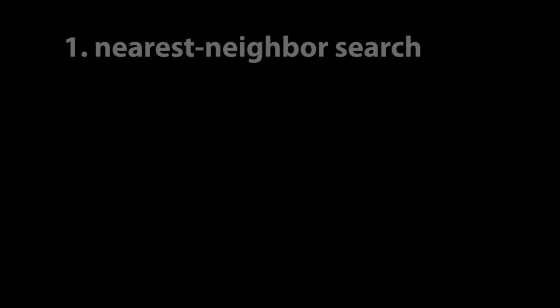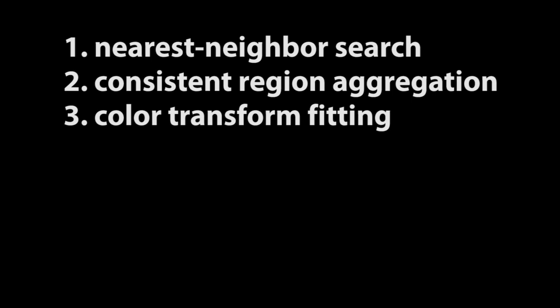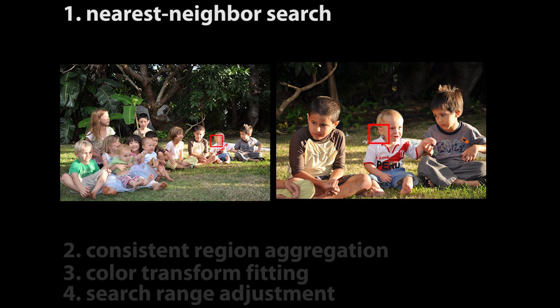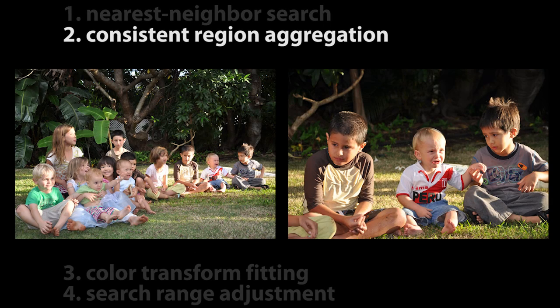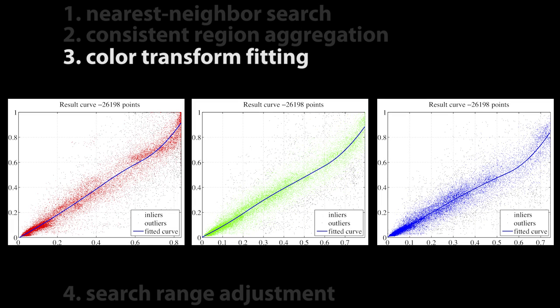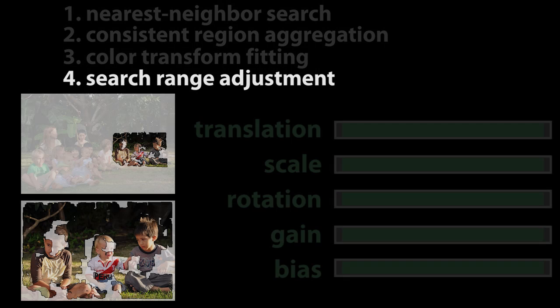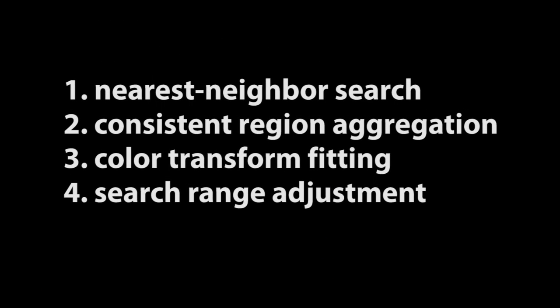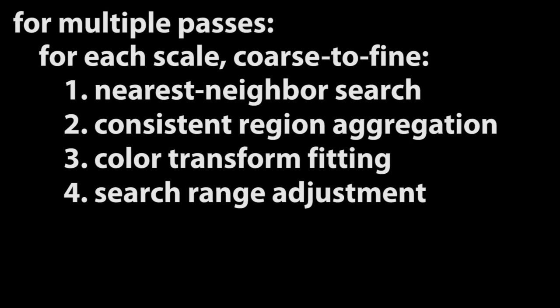To recover this image correspondence model, we propose a coarse-to-fine algorithm that repeats the following four steps at each scale: nearest neighbor search, region aggregation, color transform fitting, and search range adjustment. First, for each patch in the target image, find its nearest neighbor in the reference image, searching over a constrained range of translations, scales, rotations, brightness, and contrast values — we use the generalized patch match algorithm to do this efficiently. Second, aggregate consistent regions of matches; regions that pass a consistency test are considered reliable enough for color alignment. Third, robustly fit a color transformation model to these reliable, consistent regions. Fourth, adjust the search range for each degree of freedom of the nearest neighbor patch search in the next iteration, using both the recovered patch correspondence and the global color model to estimate plausible ranges for the search parameters. These four steps are repeated at each scale and in multiple passes until the correspondence and color transformation have converged.